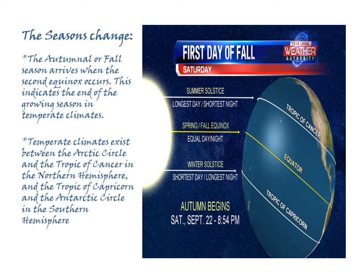In effect, at solstice you have the longest day and shortest night in summer, and winter gives us the shortest day and longest night. But in spring and fall, the equinoxes offer an equal day and equal night in hours attained.